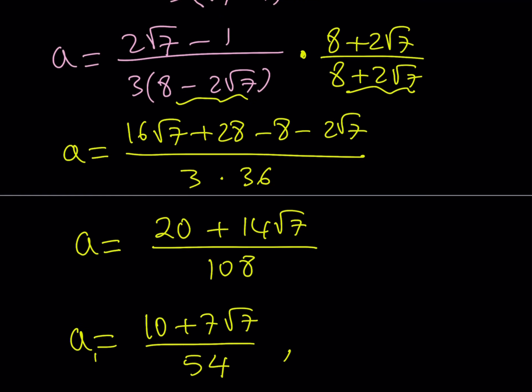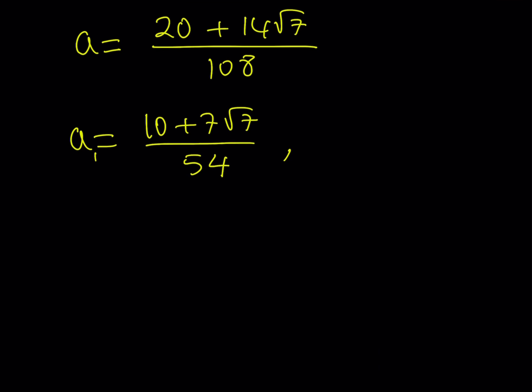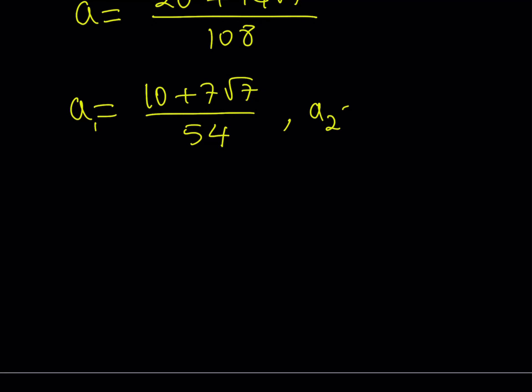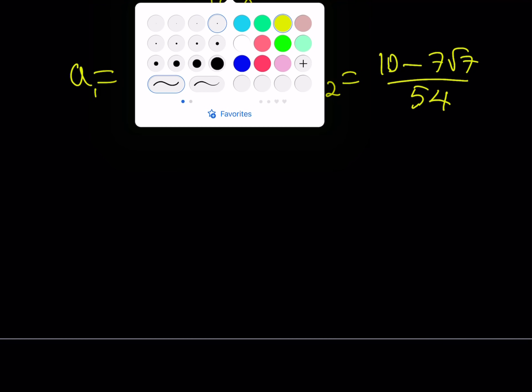And if you use the other value which is -1 - √7, plug it in, go through all the steps, eventually you're going to be getting the second a value as (10 - 7√7)/54. That's very similar. That's why I don't think we should do it. You can do it on your own if you want. Great.